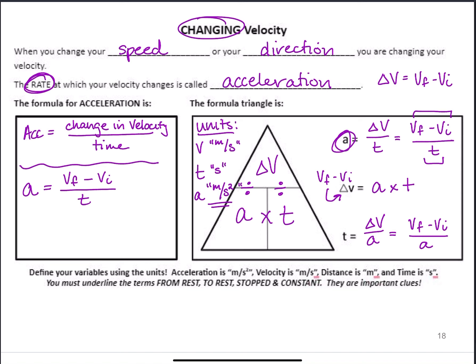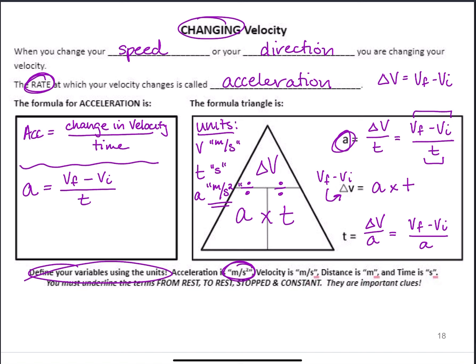With our problems, you want to define your variables using the unit, and I'll give you the graphic organizer to help with that. Remember what these units mean: meters per second squared is acceleration, meters per second measures velocity, and just meters is distance.